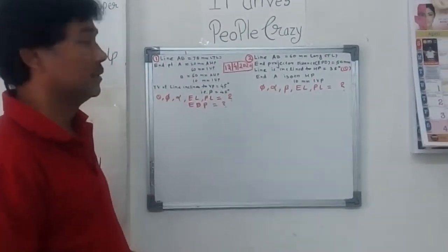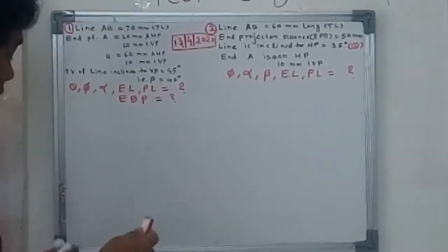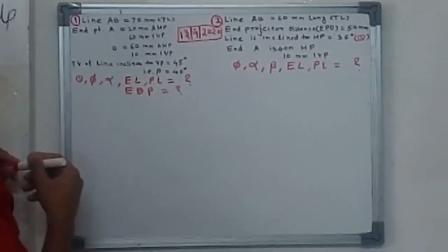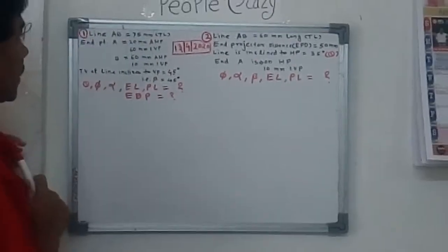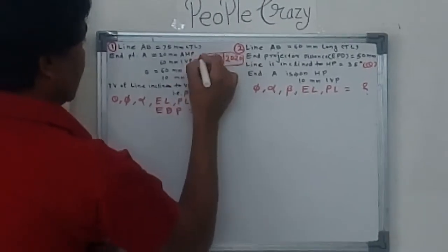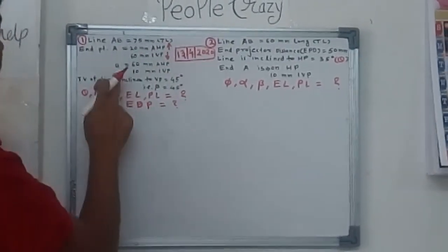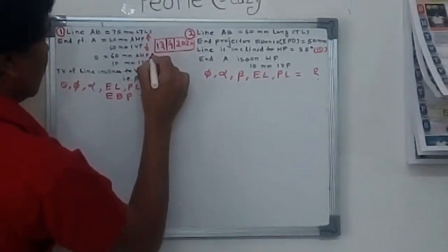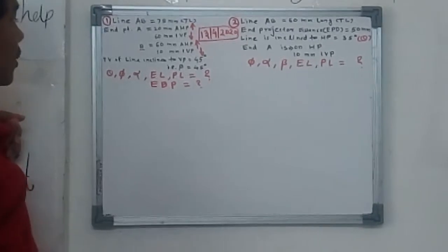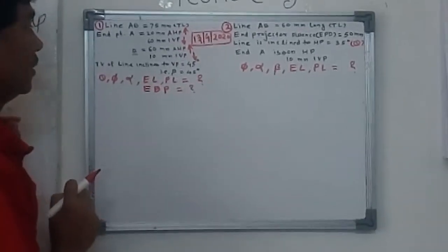Today we will see these two problems. In the first problem, the given data: line AB is 75 mm long. Endpoint A is 20 mm above HP, 60 mm in front of VP. Point B is 60 mm above HP and 10 mm in front of VP. The top view of the line is inclined to VP at 45 degrees.